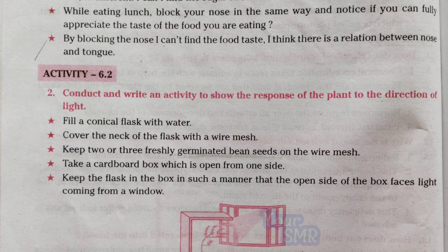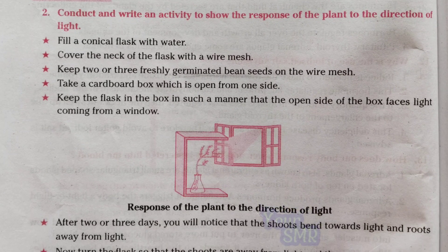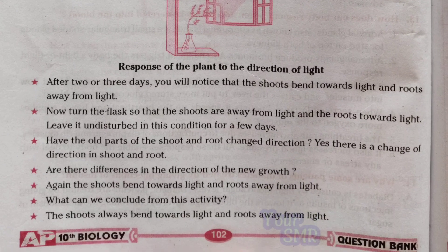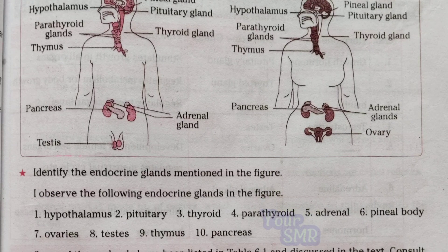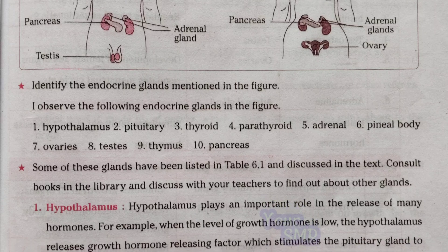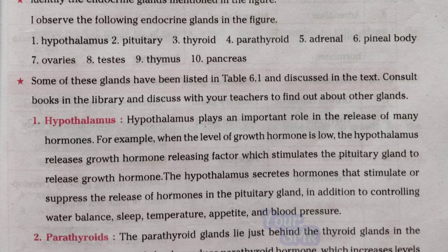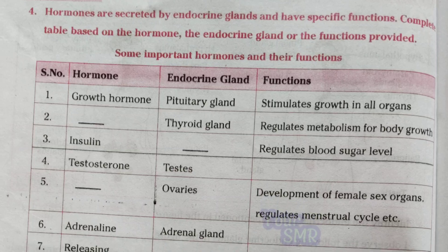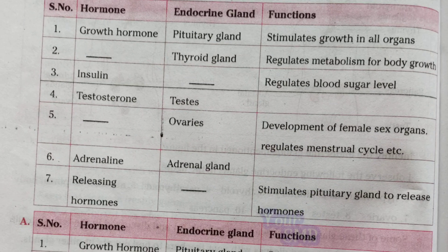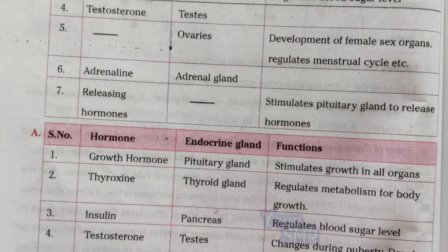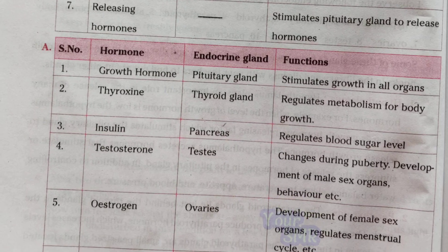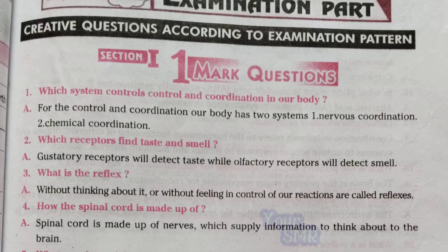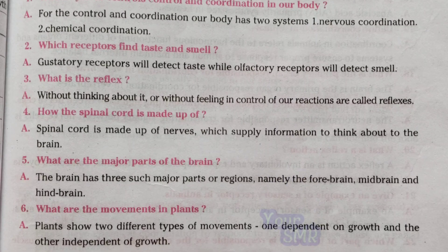The phototropism activity mentioned at the start — Activity 6.3 — is very important and can be asked for 8-mark questions. The diagram is necessary; they will ask you to label the parts, and sometimes they won't give you any parts and you will have to label them yourself. There are some ticks in the material marking the important questions. From here you will see the examination pattern and questions according to the pattern of the examination.